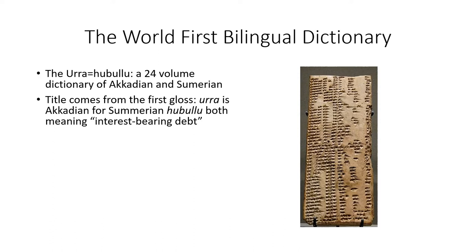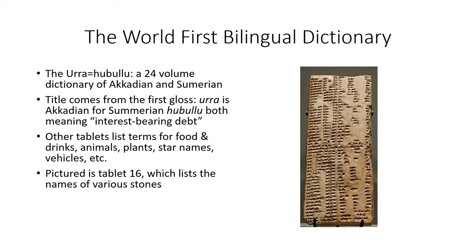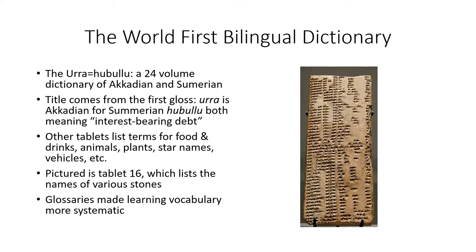The dictionary also gives you a little insight into what these two groups thought of as being important. There are 24 tablets, and others in the collection contain lists of food and drink words, terms for animals, plants, star names, vehicles both terrestrial and aquatic, and so on. This particular picture is of tablet 16, a list of various names of stones including gems — obviously things that would be traded. Having this kind of bilingual dictionary made learning the language much more systematic. You could memorize the list of words, know how they're written and pronounced, and we still use bilingual dictionaries to this very day.